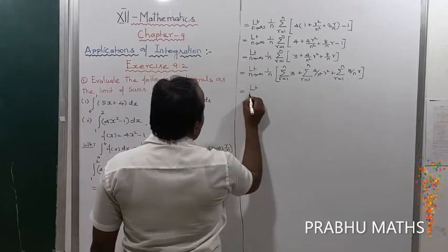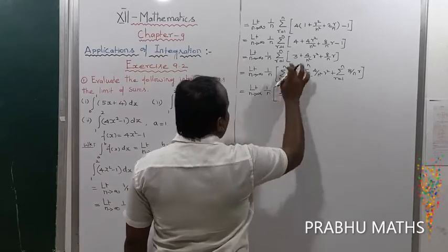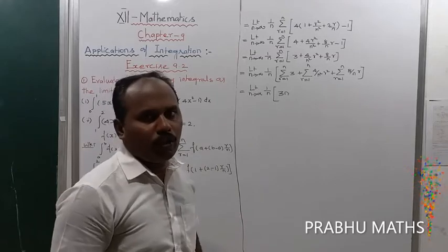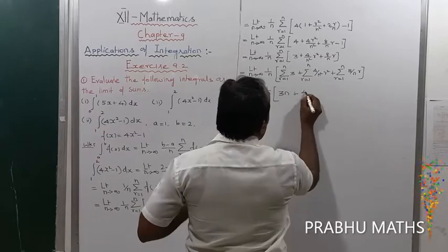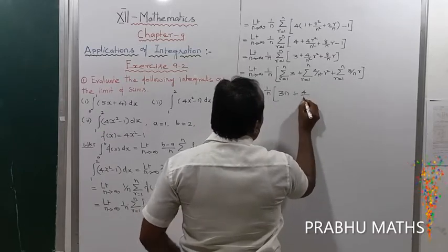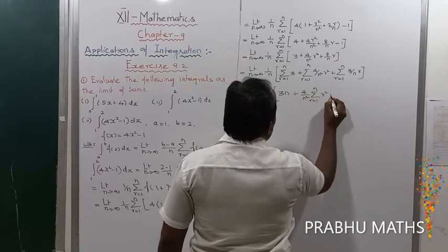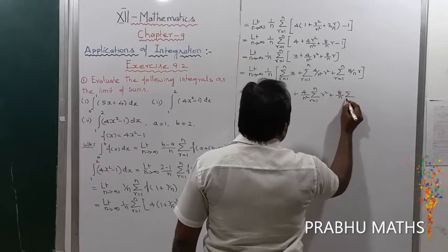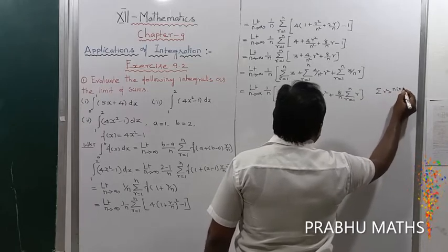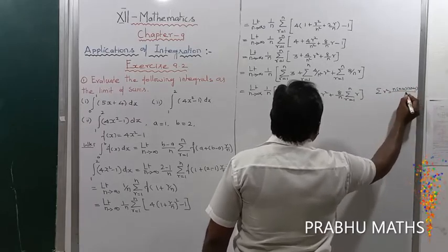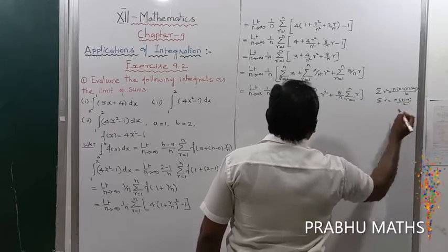This gives: limit n tends to infinity of (1/n) times [3n + (4/n²) times the summation of r² from 1 to n + (8/n) times the summation of r from 1 to n]. Using the formulas: summation of r² equals n(n+1)(2n+1)/6, and summation of r equals n(n+1)/2.